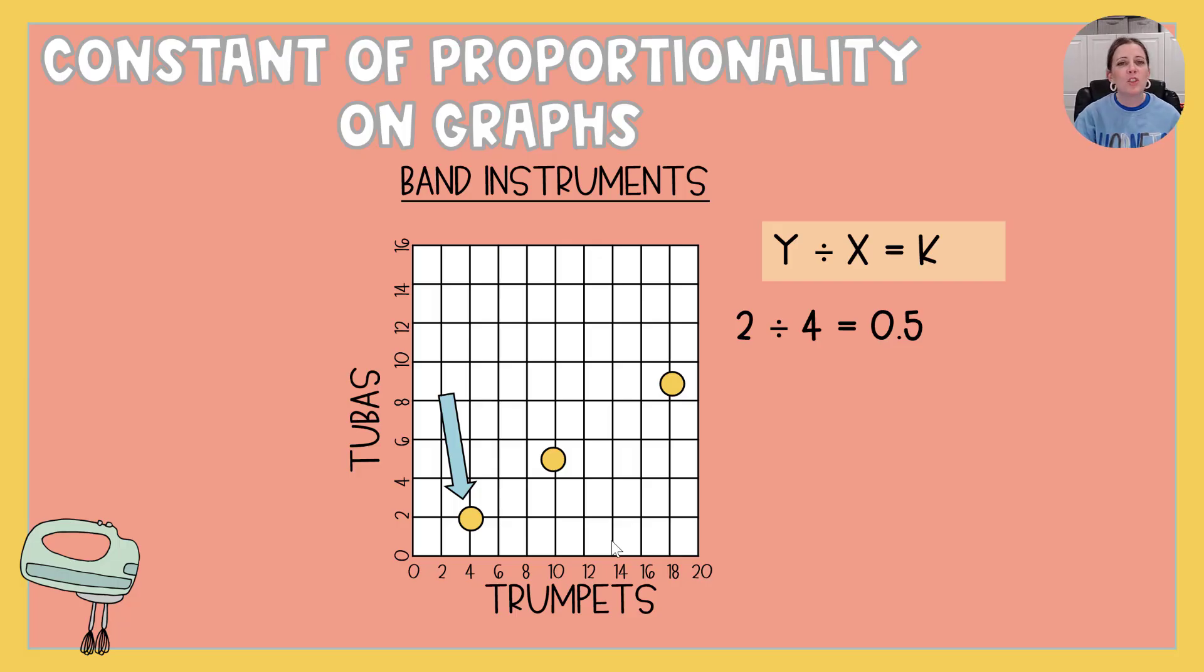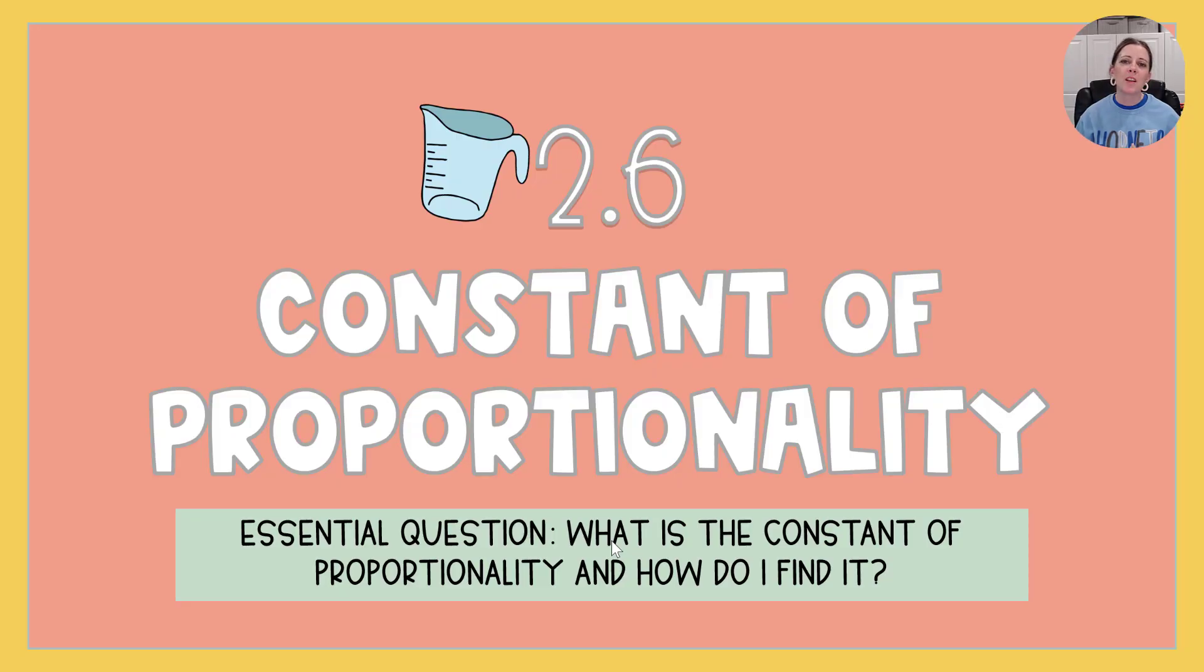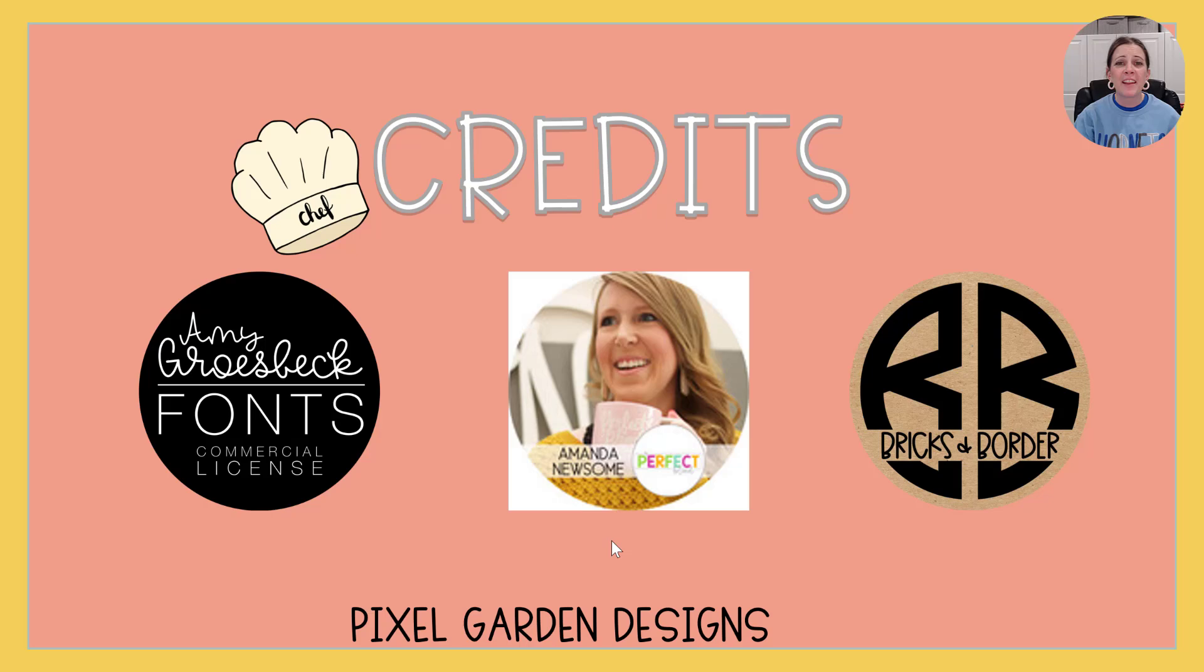So that, ladies and gentlemen, is 2.6 constant of proportionality. Hopefully you can now answer the essential question, what is the constant of proportionality and how do I find it? Got to give my shout out as always to Amy Grosbeck, Amanda Newsome, Bricks and Borders, and Pixel Garden Designs for their amazing fonts and clip arts. Mathematicians, go forth and be amazing.